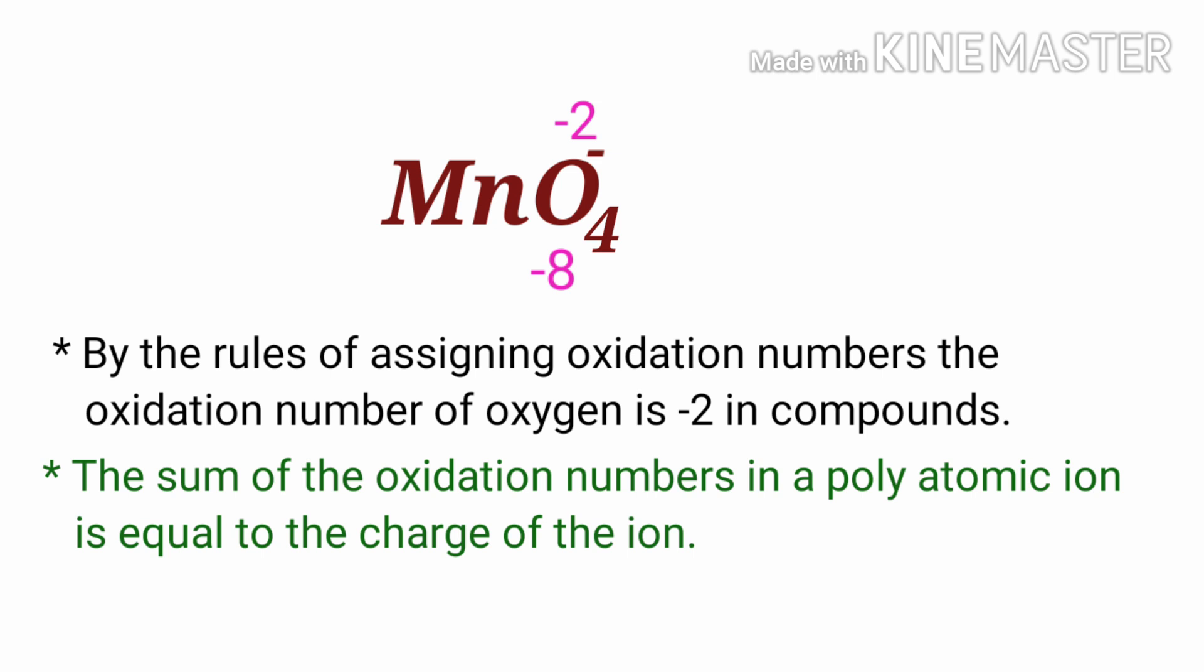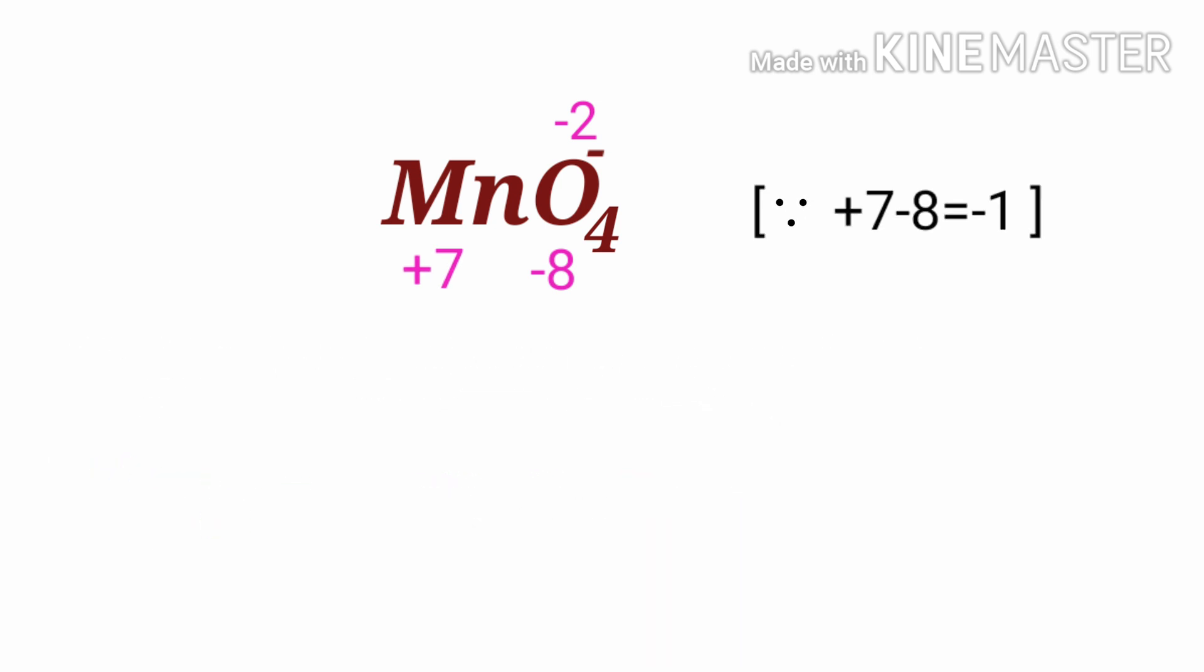So the number under Mn must be plus seven. Therefore the oxidation number of manganese in permanganate ion is plus seven.